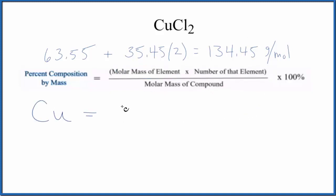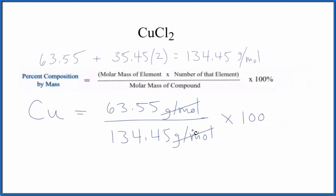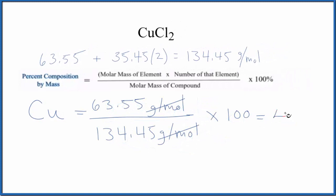Let's do copper. For copper on the periodic table, it's 63.55 grams per mole, and we divide that by the molar mass for the compound we just found. We multiply by 100 to get a percent, and you'll note that grams per mole, that cancels out. We end up with 47.27 percent. So if we had a certain mass of this CuCl2, 47.27 percent of that mass would be the copper in that compound.